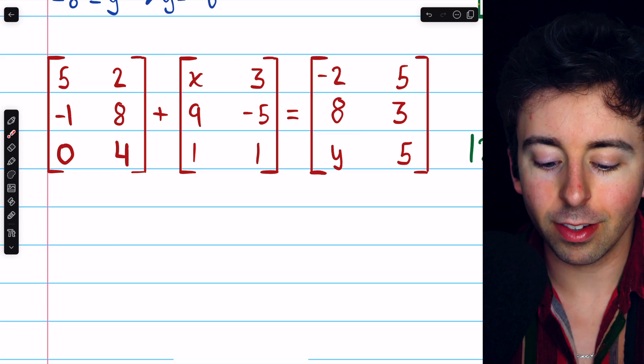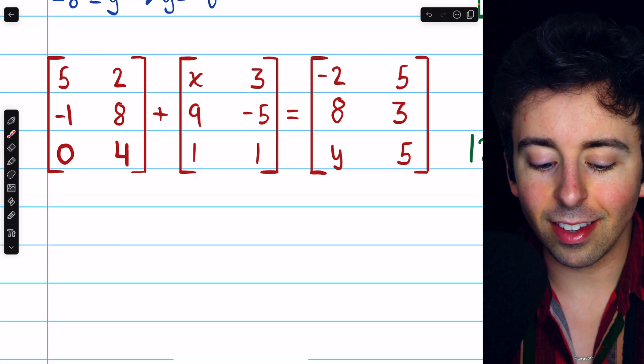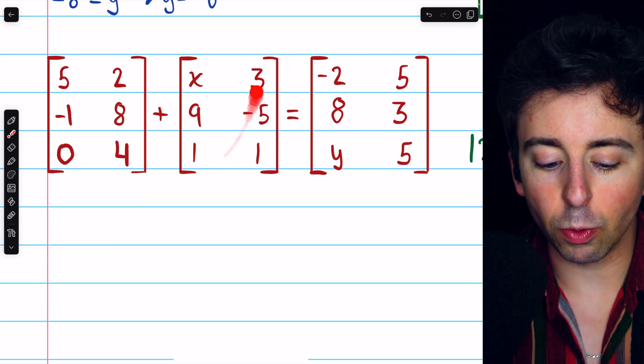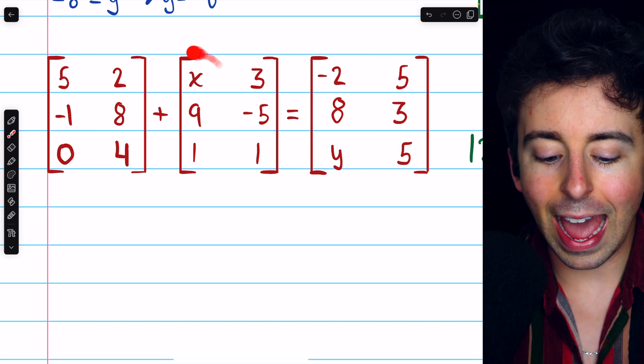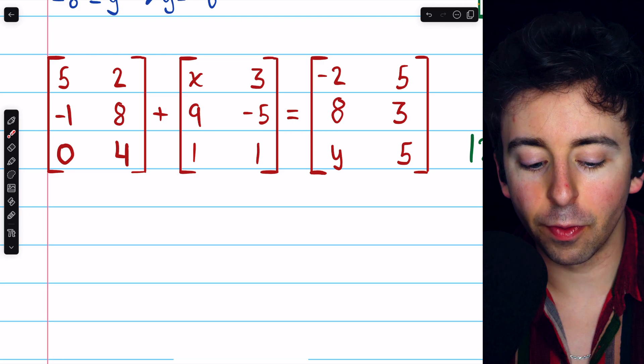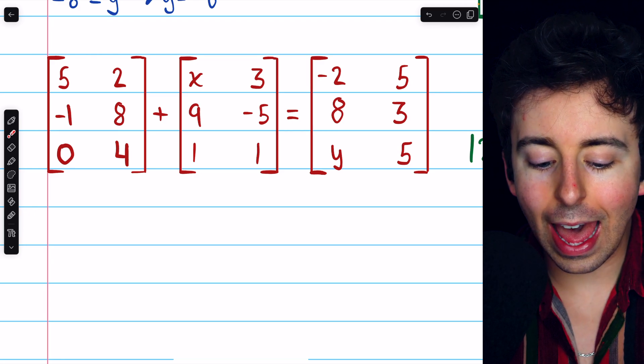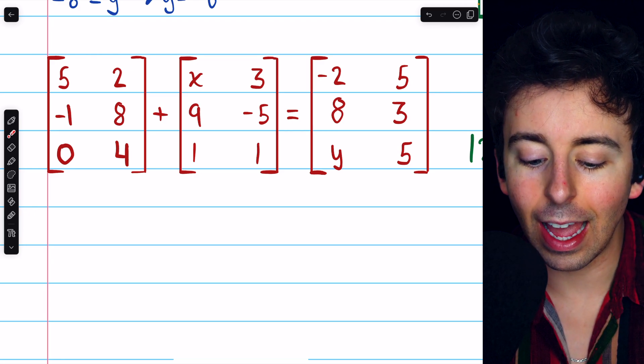Nor does it say that this matrix equals this one. It says that the sum of these two matrices on the left equals this matrix on the right. So we have to add these matrices on the left first. Which means we have to add the corresponding entries.